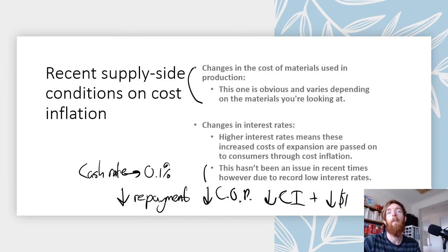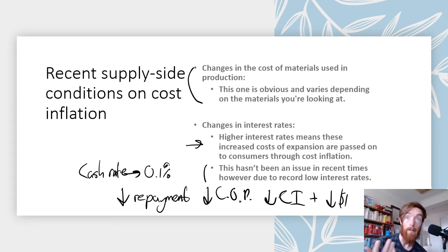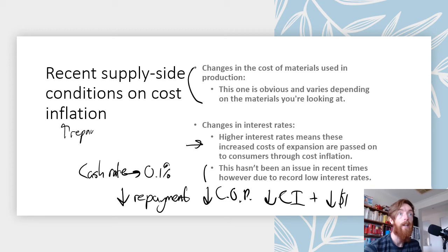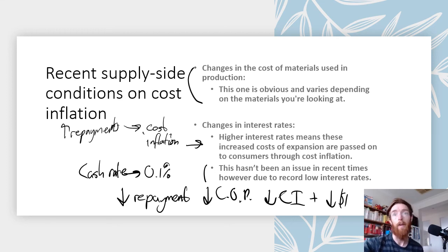Theoretically you could be asked about what happens if interest rates increase. They're not expected to increase for at least a few years, but if they were to increase, firms would have increased costs of expansion and increased repayments on existing loans, passing those costs on to consumers to protect their profit margins, which would lead to cost inflation. So with all of these factors: if something decreases productivity or increases cost of production, businesses increase prices to protect profit margins, causing cost inflation. If it decreases their cost of production, cost inflation eases as savings can be passed on to consumers.